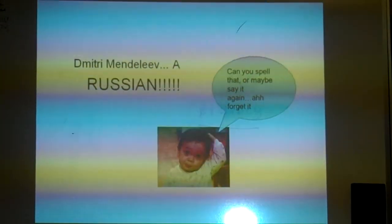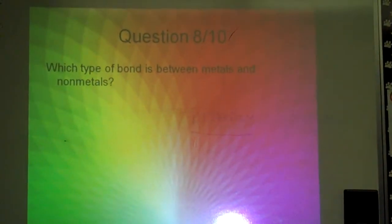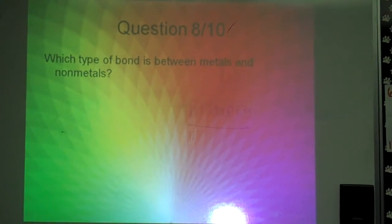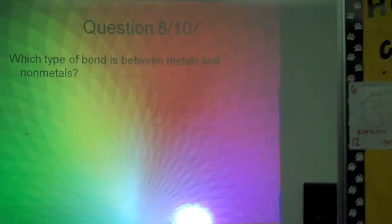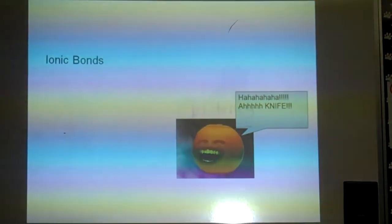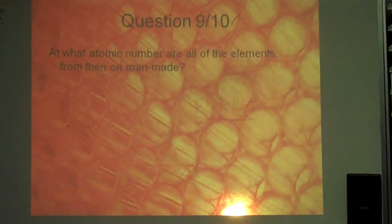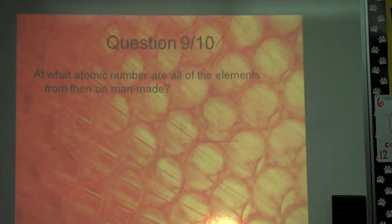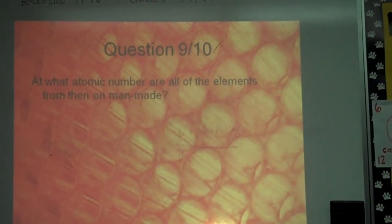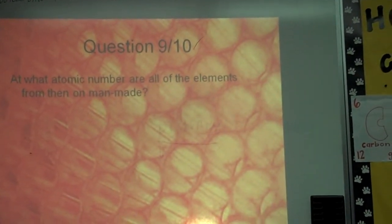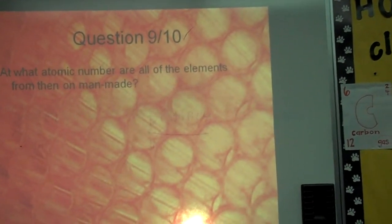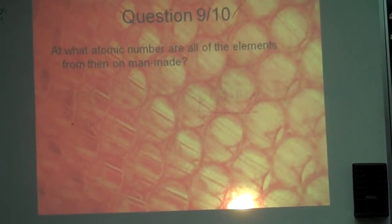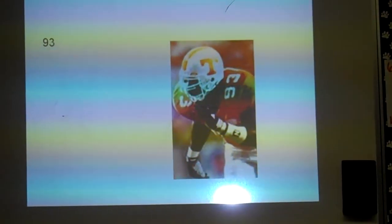Question 8: Which type of bond is between metals and atoms? Chris. Ionic bond. Question 9: At what atomic number are all of the elements from that point on man-made? Above uranium, which is... 42? 93. Good job.